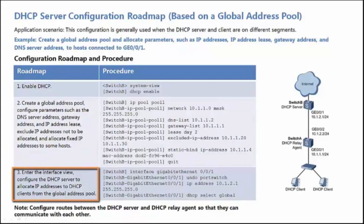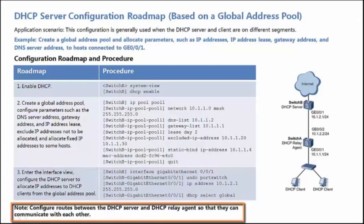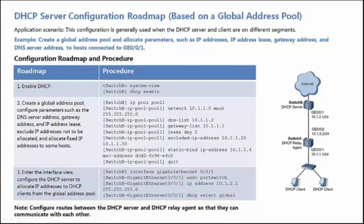Step 3: Enter the view of GE0/0/1 that is connected to the DHCP Relay Agent and configure the DHCP Server to allocate IP Addresses to DHCP Clients from the Global Address Pool. Note that routes between the DHCP Server and the DHCP Relay Agent must be configured so that they can communicate with each other.